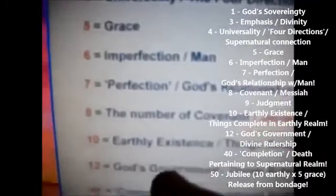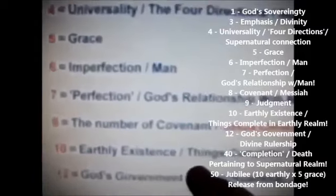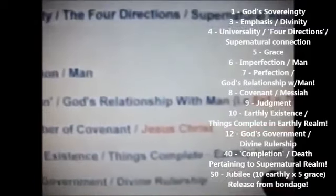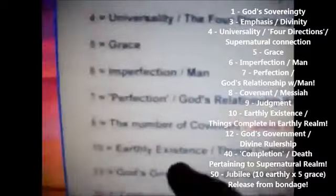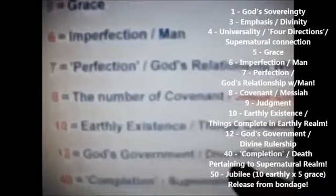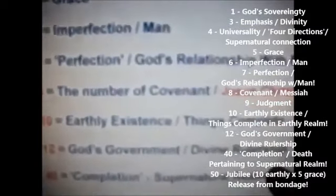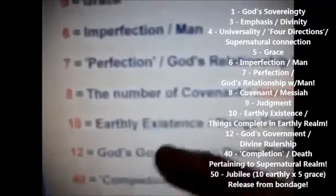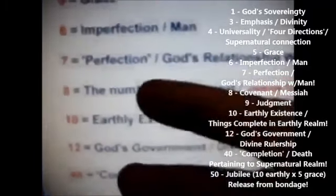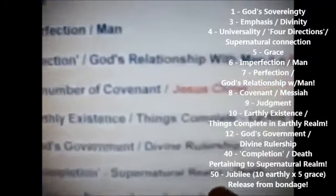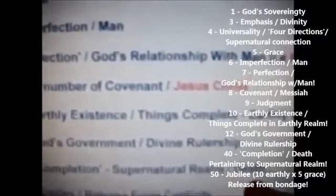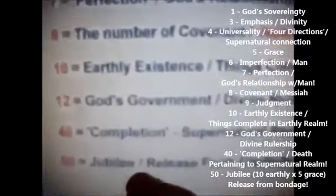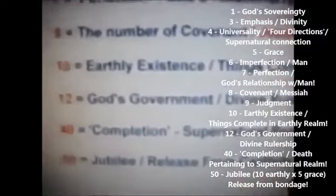Ten is the number of earthly existence — things complete in the earthly realm. Twelve: the number of God's government, divine rulership. Forty is also completion, but it's in the supernatural realm — it's also the number of death. And fifty is the number of jubilee, released from captivity.